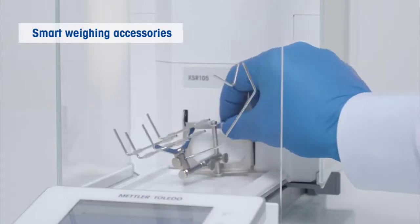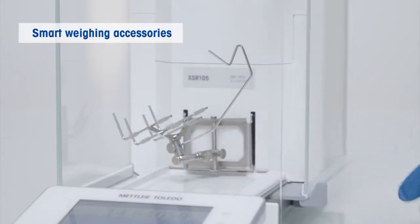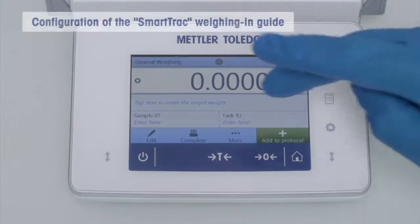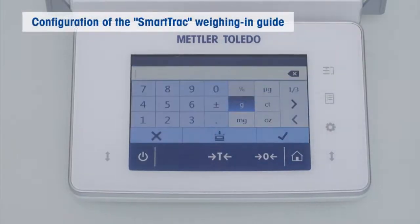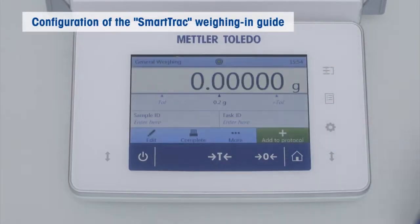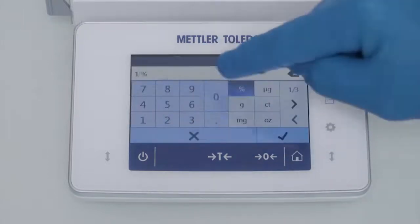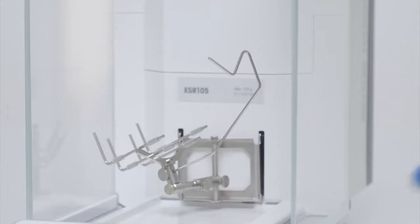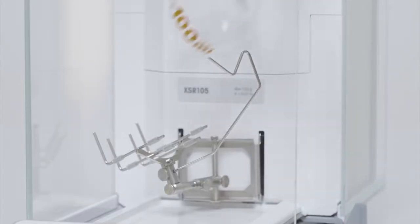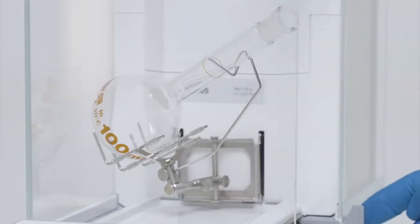To make your daily weighing tasks even more convenient Ergoclips can be used. To zero the balance place the tare container on the Ergoclip and tare it. Afterwards we dose in 200 mg of a substance.